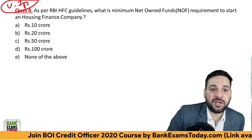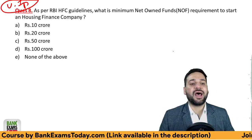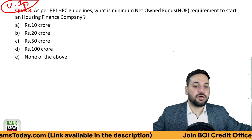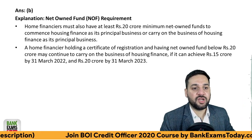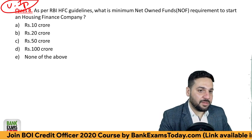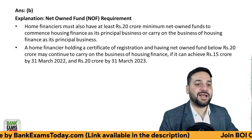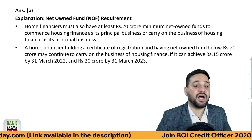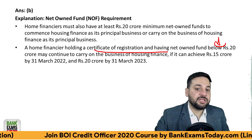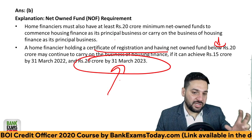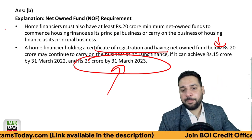Question eight — the most important question of this lecture: as per HFC guidelines, what is the minimum Net Owned Funds (NOF) requirement to start a Housing Finance Company in India? The correct answer is 20 crore. To start a housing finance business, RBI guidelines require a minimum net owned fund of 20 crore. If an existing HFC holding a certificate of registration has net owned funds below 20 crore, they must reach this 20 crore threshold. All these questions are very important for the upcoming Bank of India and PNB Credit Officer exams.